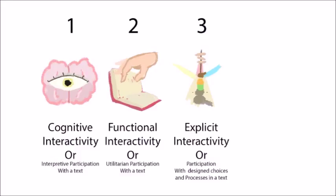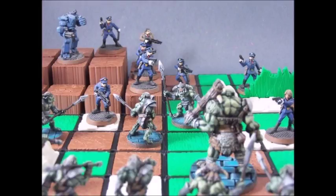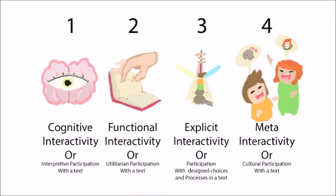Third, explicit interactivity, or participation with design choices and processes in a text. This is interaction in the obvious sense of the word — selecting non-linear links of a hypertext such as a visual novel, choose-your-own-adventure stories, role-playing games, tabletops, paper doll sets, or video games. This involves random events, dynamic simulation, or other things programmed or put together to form an interactive experience for the user of the text.